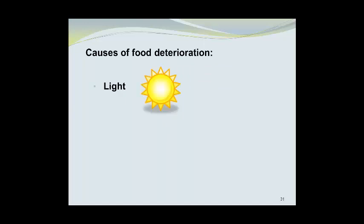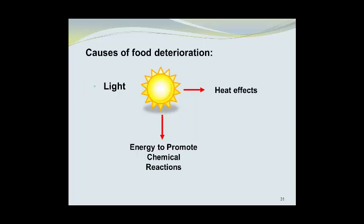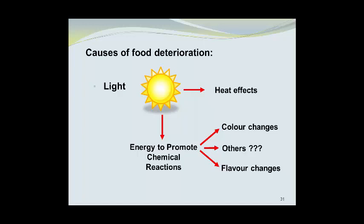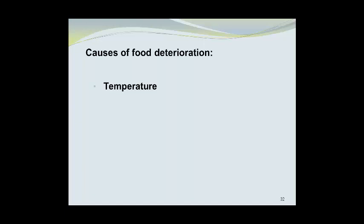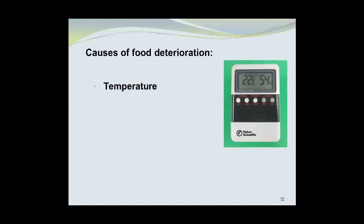Light is another cause of food deterioration. The sun provides heat, and heat can degrade food. Energy from the sun can also promote chemical reactions — these would be color changes. You only need to look as far as fabric that has changed color in the sun to realize just how powerful the sun's rays are. That same type of energy can cause deterioration of food products, inducing flavor changes and other undesirable reactions. Temperature is another major factor. On this thermometer we see 22 degrees Celsius, considered an ambient or room temperature. At those temperatures, food will degrade at a certain rate. However, if we were to chill the food, we could slow the deterioration, but if we were to warm the food from this temperature, it would enhance the rate of deterioration.